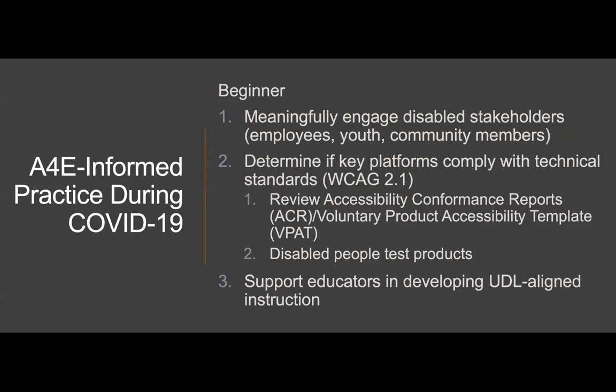The A4E framework suggests a handful of actions for those at the beginning of the process. First, meaningfully engage disabled stakeholders in the work and value their contributions. Disabled employees, disabled youth, and disabled community members will identify inaccessibility and ableism that is baked into K-12 schools' emergency distance learning plans — factors that able-bodied educators have overlooked. And if disabled people are meaningfully engaged and their knowledge and viewpoints are valued in future work, inaccessibility and ableism can be addressed before that oppression becomes integral to the learning environment.